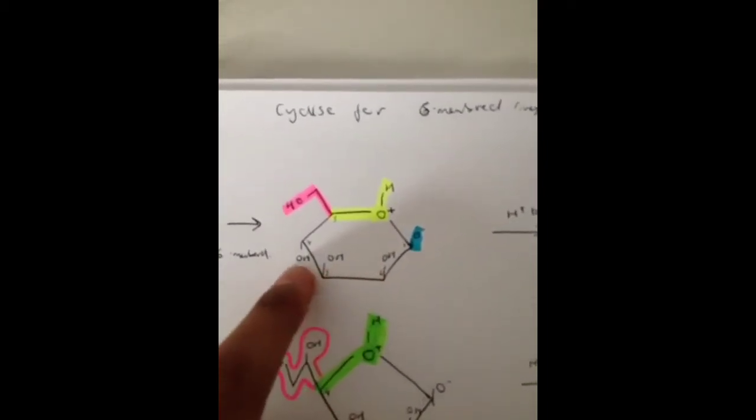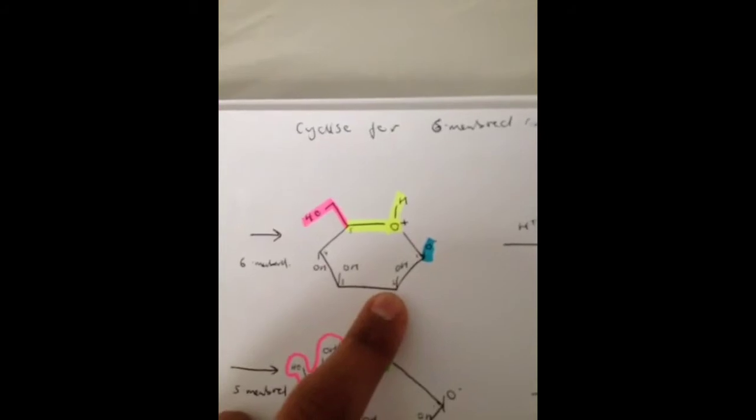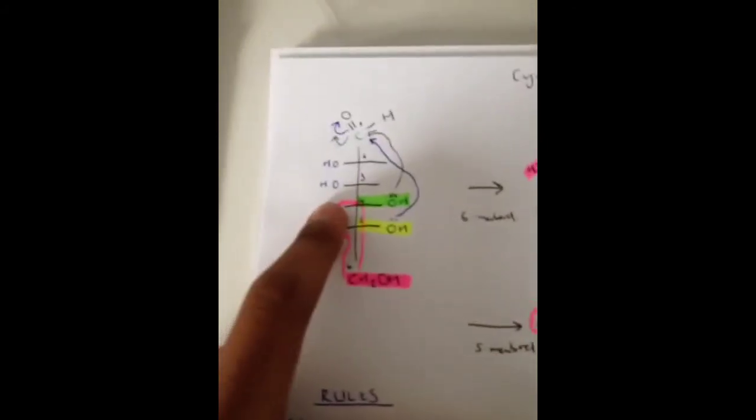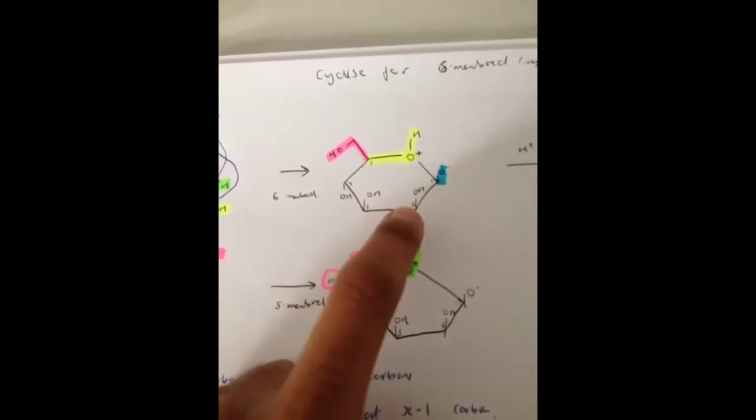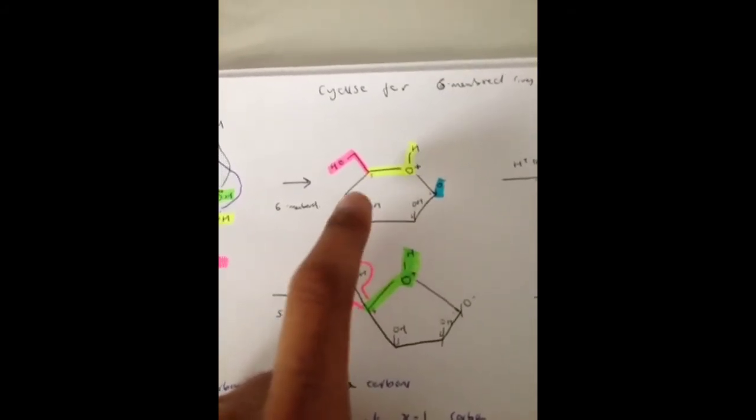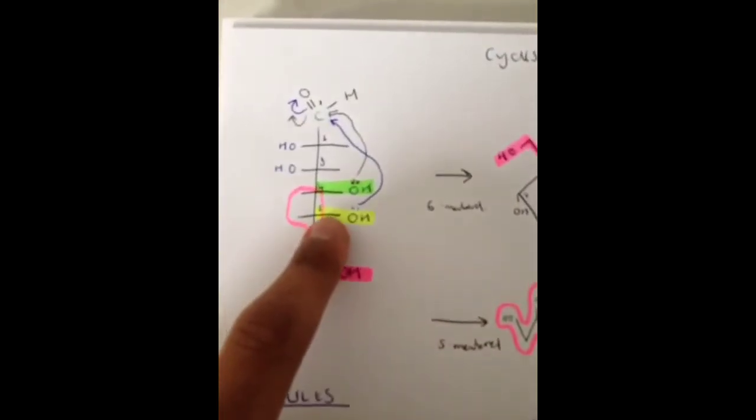Then you move onto rule number 5, LA road. So because these were on the left hand side, number 2 and 3 carbons, it will go above. LA, left above, left above. And this one was on the right hand side as you can see, so this must be below.